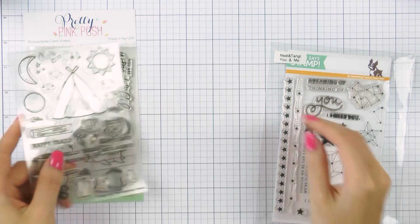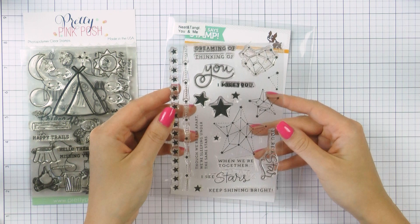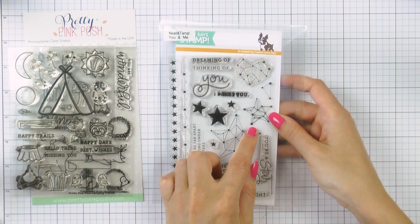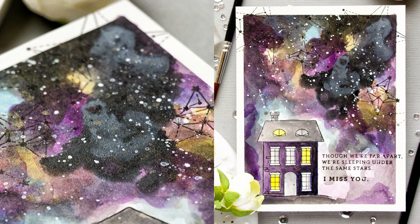Another set I'm using today is called Seeing Stars and it is from Simon Says Stamp. It is an older set from one of Simon's card kits and it's a fantastic one to use when creating galaxy backgrounds.